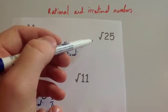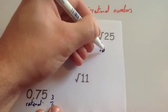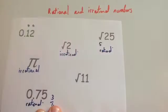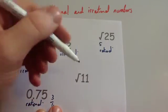The square root of 25, the square root of 25 is 5, so therefore it's irrational. However, the square root of 11, if you were to work that out, that's going to be irrational.